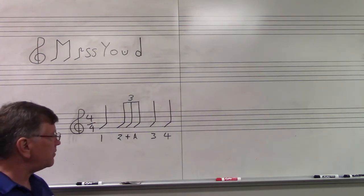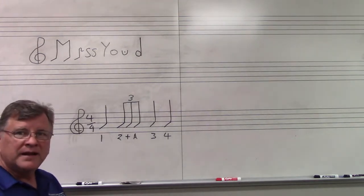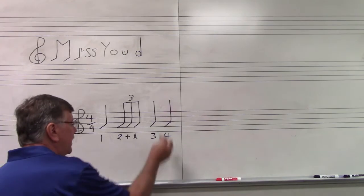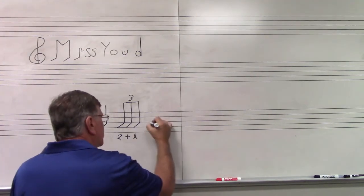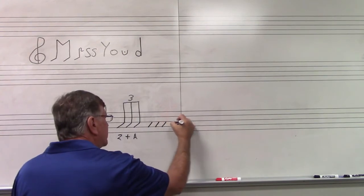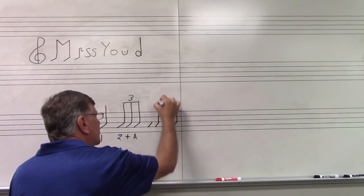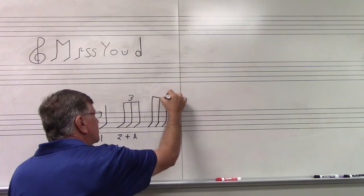One, two, and a three, four. And that's a triplet. I'm going to change it up just a little bit and we'll put a triplet on three. Now we have two in a row.